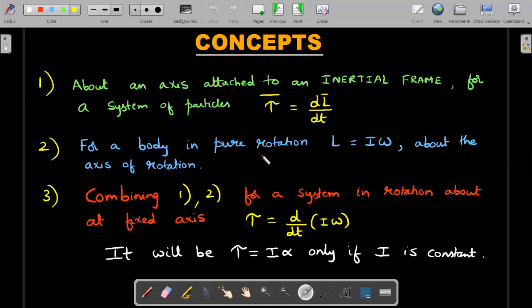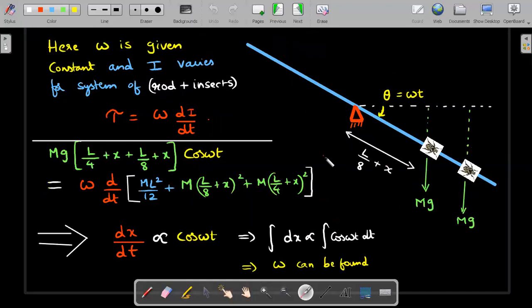Combining one and two, assuming the system is in rotation about a fixed axis, this would be the condition: tau equals d/dt of I Omega. This will become tau equals I alpha only when I is constant. If I isn't constant, then I have to manipulate from here itself. That's why tau equals I alpha in the present scenario will not be applicable with the system of rod plus insects because insects are walking away and the mass distribution of the system is changing, thereby I actually changes. So I'll use this yellow equation and not tau equals I alpha.